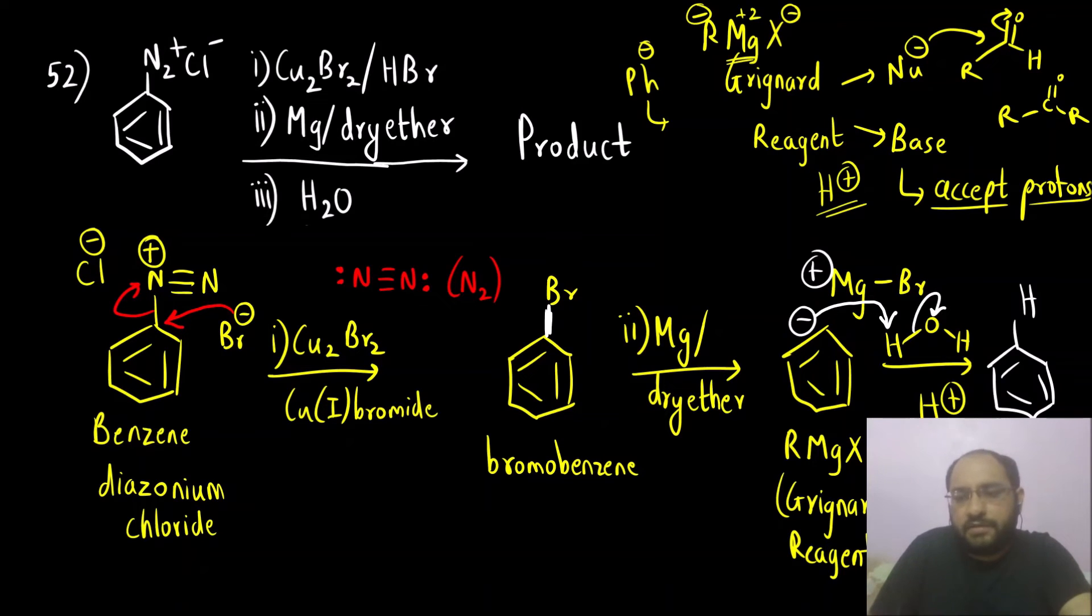What we will get is we will get benzene and here there is hydrogen. This is which compound? This is benzene and the byproduct is MgBr and OH. This is a final product that is benzene.